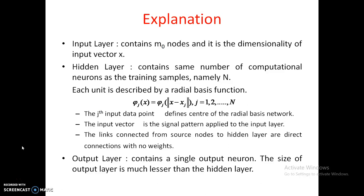Each unit is defined by the function φ_j(x) = φ_j(|x − x_j|), where j runs from 1 to N. The j-th input data point x_j defines the center of the radial basis function. The radial basis function is like an inverted-V type network with some width and a center. For each input there is a center point x_j, and x is the signal pattern applied to the input layer.